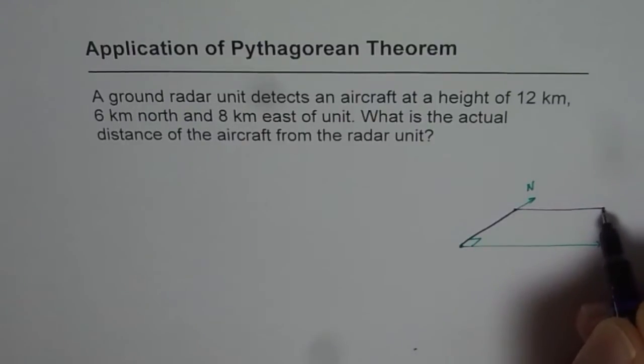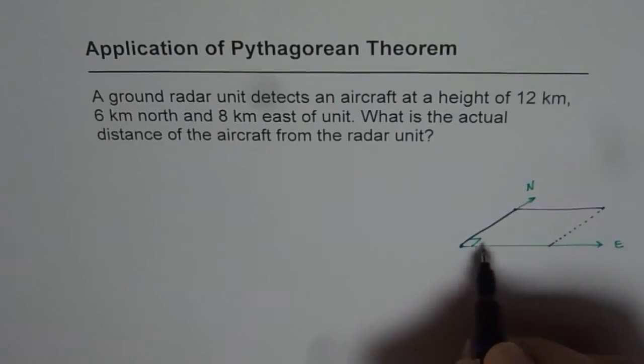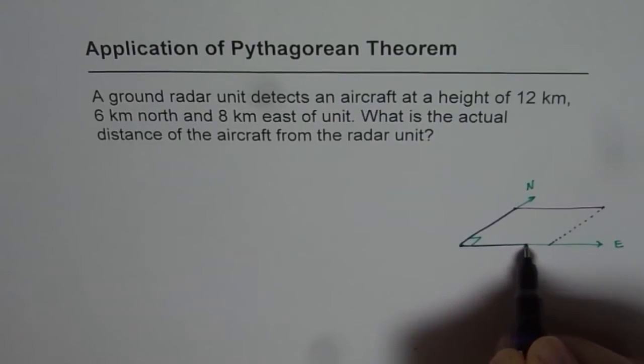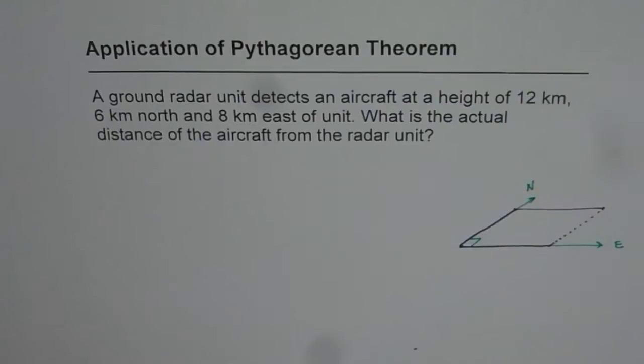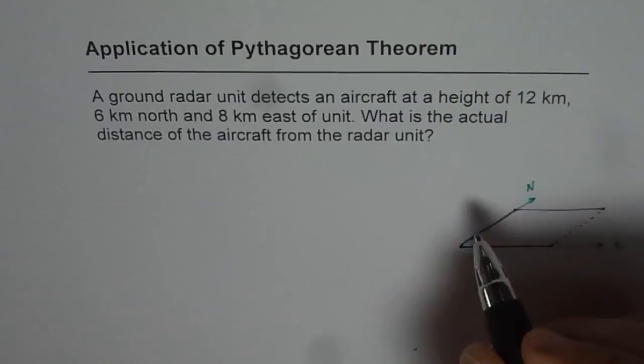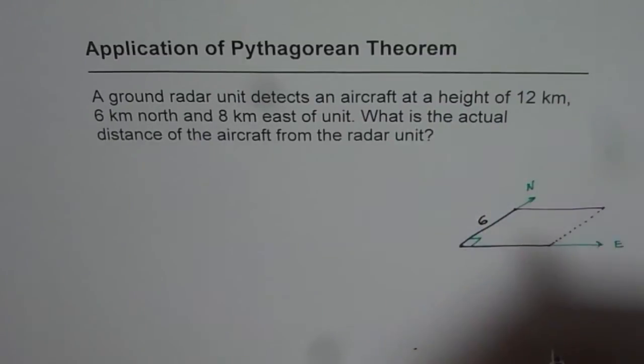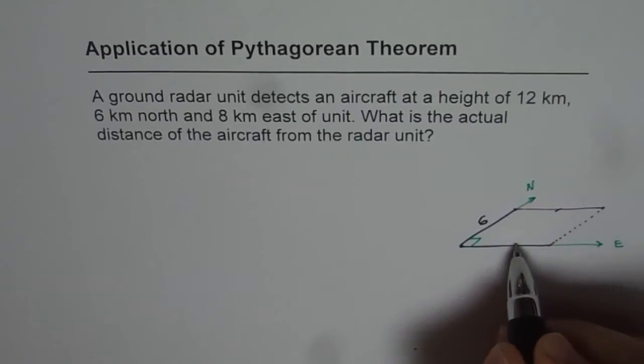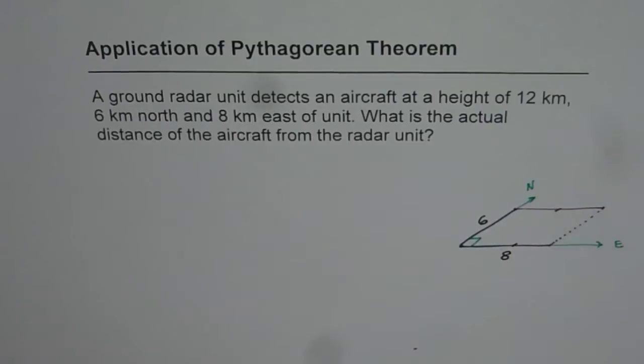So on the base we have a rectangle whose lengths are 6 km in the north and 8 km. These two sides are equal so we will just write 8 km here for the time being.